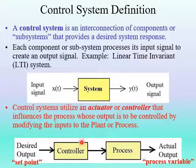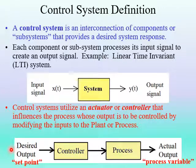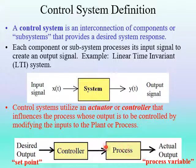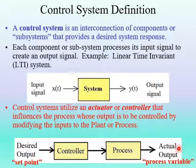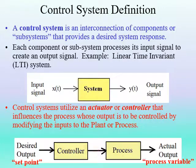This diagram shows a basic control system without any feedback at all. The input to the control system is what we want — this is the desired output, also called the set point. That signal goes into the controller, which sends a signal to the plant or process to produce the actual output, called the process variable. In a perfect world, this actual output will be exactly what we wanted, but as we'll see, that's not always the case.